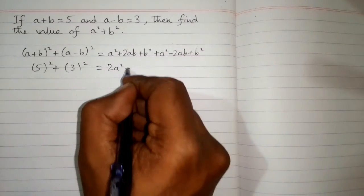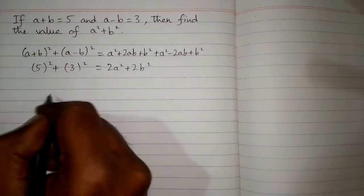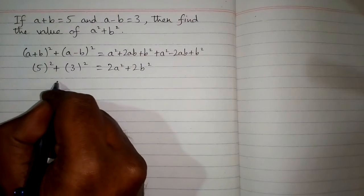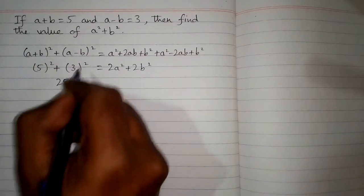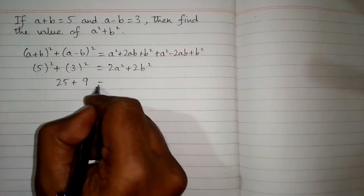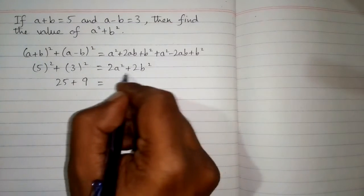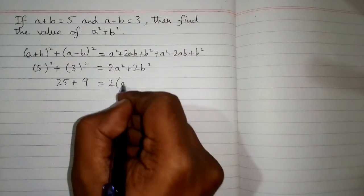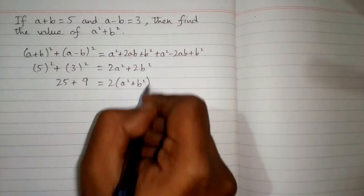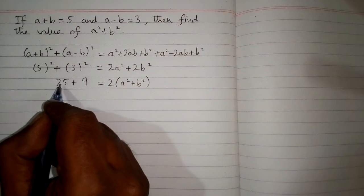Now square of 5 is 25 and square of 3 is 9. And here we can take 2 common, so we have 2(a²+b²). Now 25+9 is equal to 34.